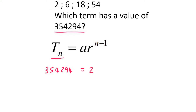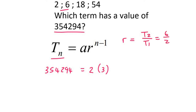Now A is your first term, which is 2. R is 3. How do I know that R is 3? Because I can see that they are multiplying by 3 when going from one term to the next. If you battle to find that, you can just say t2 over t1, which is going to be equal to 6 divided by 2, which is 3.